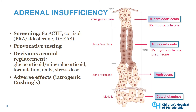With respect to screening and management, we typically screen for adrenal insufficiency with 8 a.m. measurements of ACTH and cortisol, because cortisol is a diurnal hormone. We may also measure aldosterone and renin levels as well as an adrenal androgen, DHEAS. In individuals with primary adrenal insufficiency in particular, other adrenal hormone deficiencies may be present. The adrenal cortex produces glucocorticoids, mineralocorticoids, and androgens, while the medulla produces catecholamines, and deficiencies of all of these can occur.